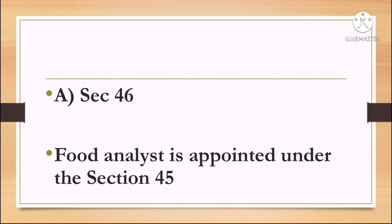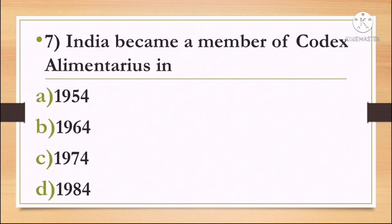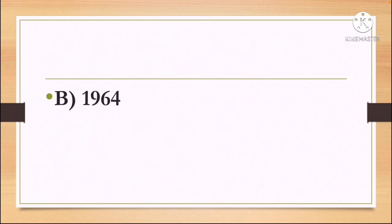Next question: India became a member of Codex Alimentarius in — Option A: 1954, Option B: 1964, Option C: 1974, and Option D: 1984. India became a member of Codex Alimentarius in 1964. The correct answer is Option B, 1964.